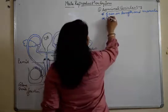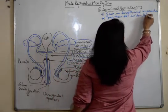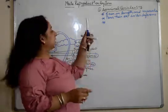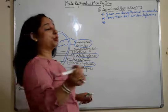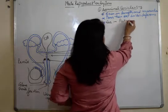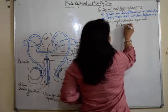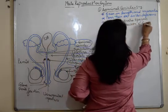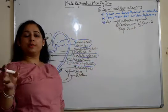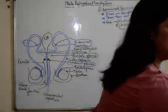They pour their secretion in vas deferens, the one which you call as sperm duct. Now the secretion which is poured by these seminal vesicles plays an important role in the male reproductive system. The secretion activates sperms, one. Second, it leads to contraction of female reproductive tract during the process of copulation or during the movement of sperms in the female reproductive tract.